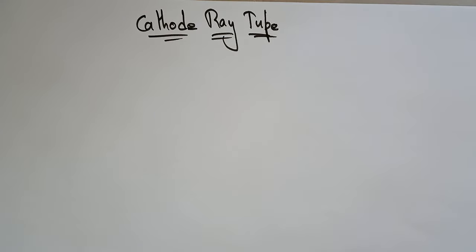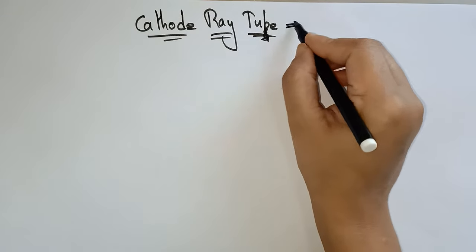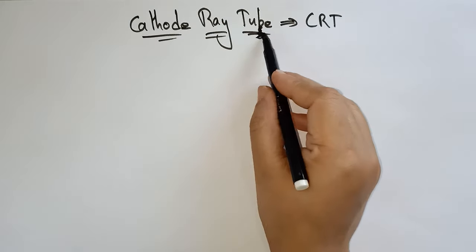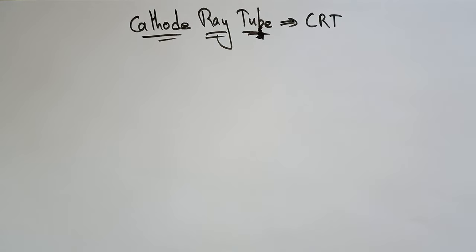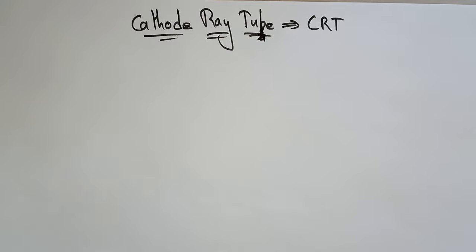Hi students, welcome back. Coming to the next topic in the subject computer graphics is a cathode ray tube, commonly called CRT. We all know that computer graphics has become a common element in today's modern world, because we are almost working on data visualization and motion pictures, in which computer graphics plays an important role.